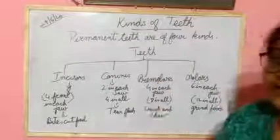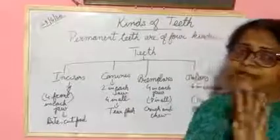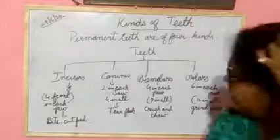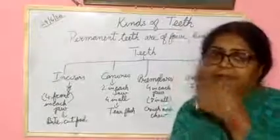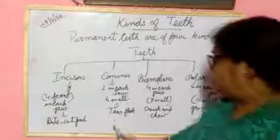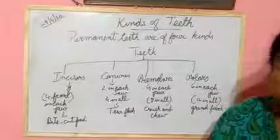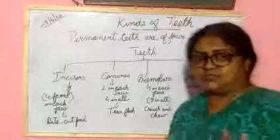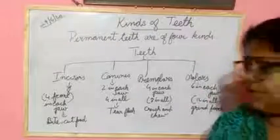Next one is canine. Altogether, four canine teeth are there. Two in each jaw — upper jaw two and lower jaw two. It is pointed. It is used to tear the flesh. Understood? This type of teeth are pointed.